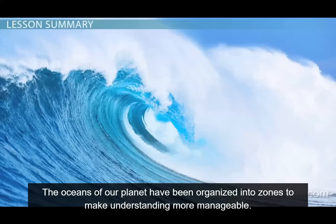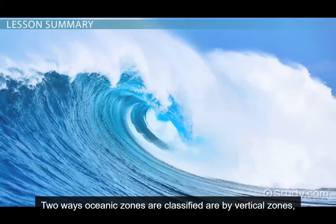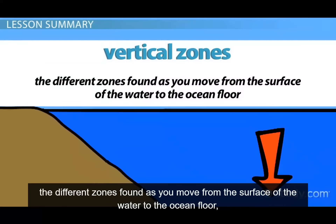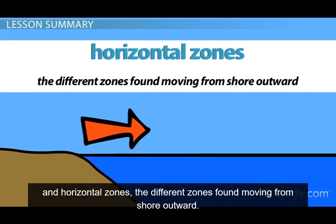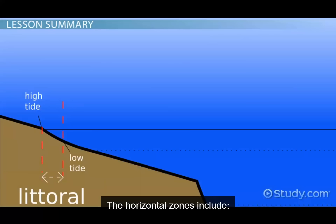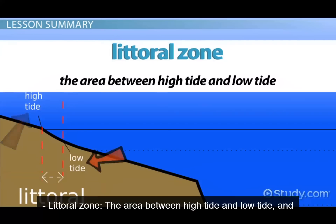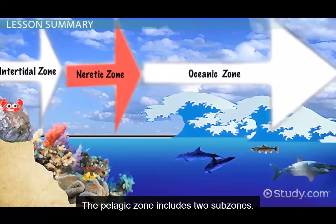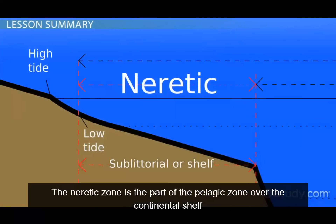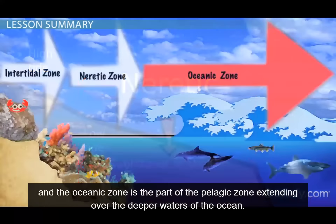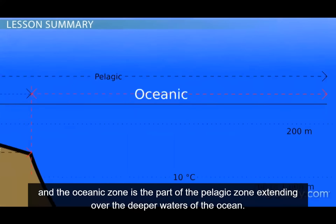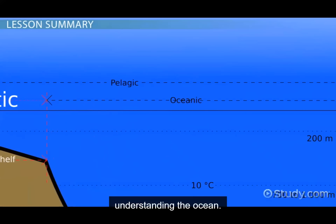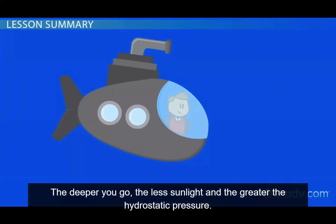The oceans of our planet have been organized into zones to make understanding more manageable. Two ways oceanic zones are classified are by vertical zones — the different zones found as you move from the surface of the water to the ocean floor — and horizontal zones, the different zones found moving from shore outward. The horizontal zones include the littoral zone, the area between high tide and low tide, and the pelagic zone, the area from the low tide mark out into the open ocean. The pelagic zone includes two subzones: the neritic zone over the continental shelf, and the oceanic zone extending over the deeper waters. Once you pass the continental shelf, the vertical zones play a more important role. The deeper you go, the less sunlight and the greater the hydrostatic pressure.